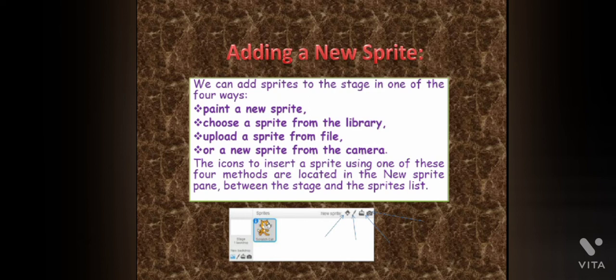Third, upload a sprite from file. You can add a sprite saved on your computer. After clicking on it, the select files to upload dialog box opens, in which you can select the file you want to insert, then click the open button. The selected file will be added to the sprite list.